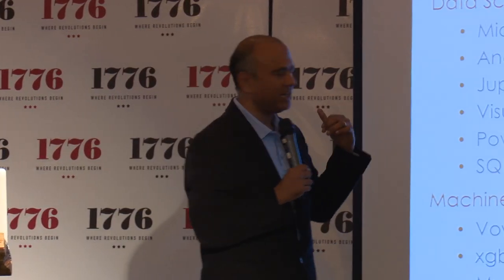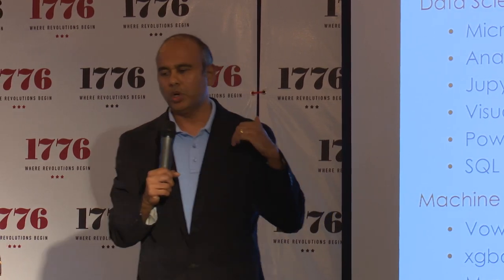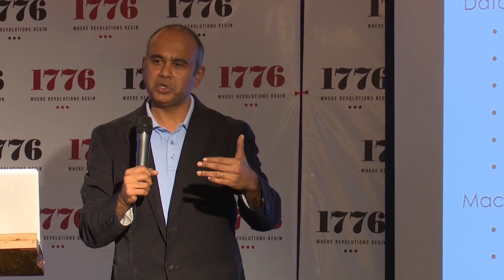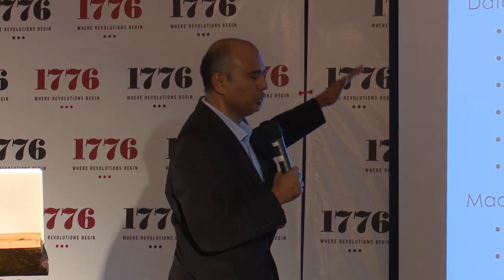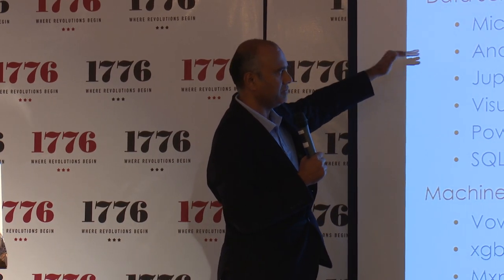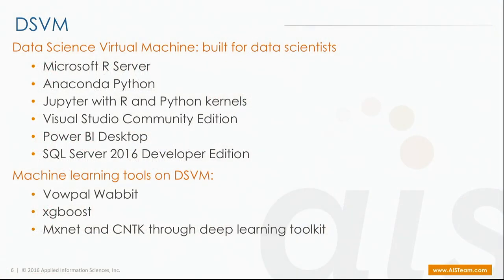Since you can't use Azure ML right now, we wanted to talk about the Data Science Virtual Machine. What Microsoft has done is created essentially a virtual machine with all of these tools pre-installed — things like R Server, Python, Power BI desktop, and on top of that they've installed deep learning toolkits including Microsoft's Cognitive Toolkit and other open source toolkits. You can go to the marketplace and get yourself a Data Science VM, and even though Azure ML is not available in Azure Gov, you can still continue to run these machine learning algorithms.